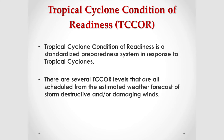The tropical cyclone condition of readiness, or T-Core, is a standardized preparedness system we use to prepare for tropical cyclones before a storm's arrival and as it passes through. We use this standardized system so we know exactly how to prepare, respond, and recover from a tropical cyclone. There are several levels of T-Core, all scheduled from the estimated weather forecast of either storm destructive or storm damaging winds.